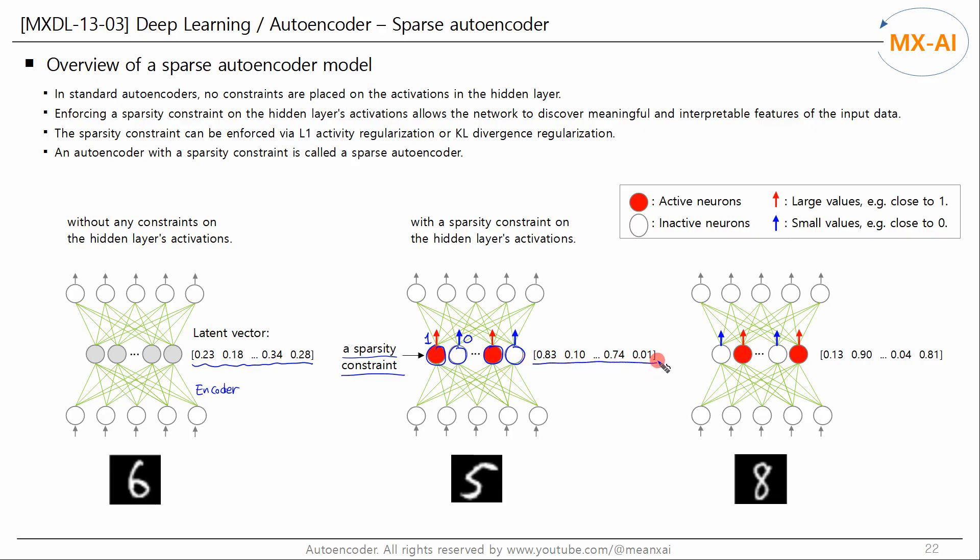Let's say the latent vector is like this. These values are very large compared to the rest. For example, let's say that when an image similar to the digit 5 from MNIST is input, these two neurons are activated. Then we can guess the shape of the input image just by looking at the latent vector. That is, the latent vector has meaningful and interpretable features for the input data.